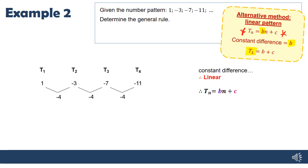So this is a linear pattern and I'll use T_n = bn + c. The constant difference of -4 equals b, so I know one of my values. Since term 1 equals b + c, I can substitute b = -4 into the equation, solve for c = 5, and substitute back to get my final rule T_n = -4n + 5.